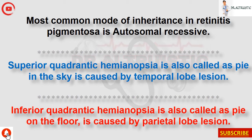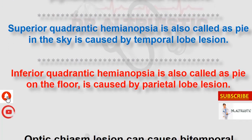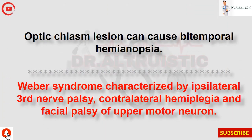Superior quadrantic hemianopsia, also called 'pie in the sky,' is caused by a temporal lobe lesion. Inferior quadrantic hemianopsia, also called 'pie on the floor,' is caused by a parietal lobe lesion. Optic chiasm lesion can cause bitemporal hemianopsia.